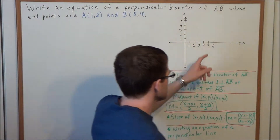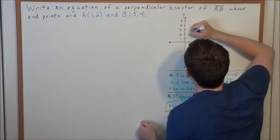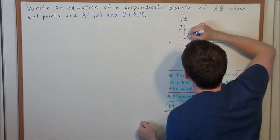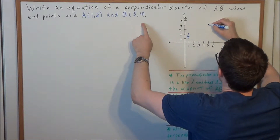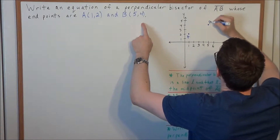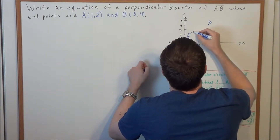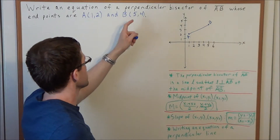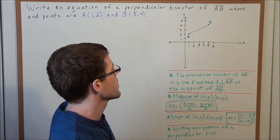So we're looking at the Cartesian plane and we should start with plotting the point (1, 2) and labeling it A. Next we could plot the point (5, 4) and label this point B. So now when we join these two points, we can form line segment AB, and the goal is to write an equation of a perpendicular bisector of line segment AB.